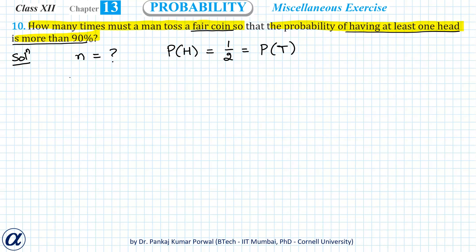We want to find the probability of having at least one head, and this should be greater than 0.9. When we talk about at least one head, we may have exactly one head, or exactly two heads, or up to exactly n heads. There are many cases, so in such situations it is easier to consider the complement of the event.